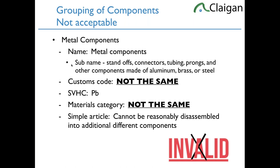When you can't use grouping: if you want to say 'metal components' because your aluminum, brass, and steel are all lead — standoffs, connectors, tubes, prongs, and other components made of aluminum, brass, or steel — their customs codes aren't the same, and their materials categories aren't the same. When you go into IUCLID, brass has a different pull-down than steel — they're not the same material. You have to separate aluminum, brass, and steel. They're all the same SVHC and all simple articles, but they don't share customs code or materials category. So there are limitations — you can't just stuff everything in the same bucket.